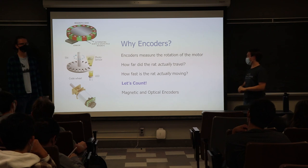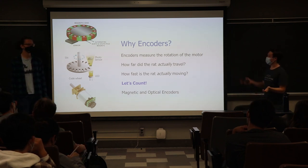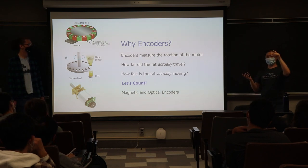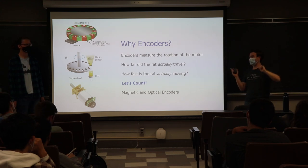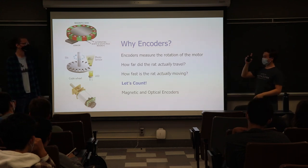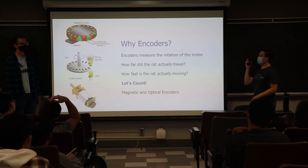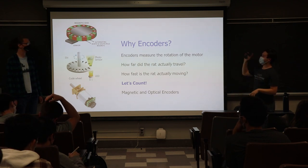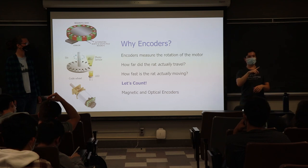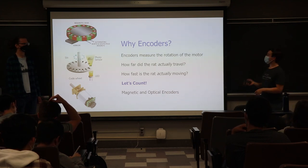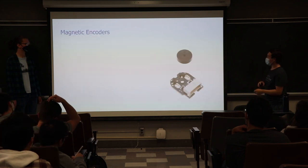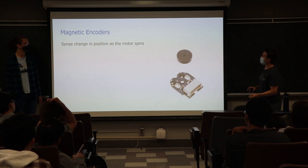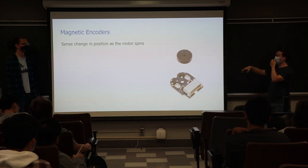There are two different kinds of encoders: magnetic and optical. With optical encoders, you have a code wheel with a photosensor where light gets cut on and off — the sensor counts each time the wheel blocks the light. With a magnetic disc encoder, you count how many times the magnetic field switches sides. We're going to use magnetic encoders. They sense the change in motor position as it spins.